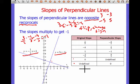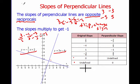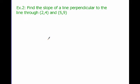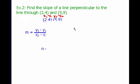So the key thing is that the slopes of perpendicular lines are opposite reciprocals of each other and they multiply to get negative 1. Here's an example: find the slope of a line perpendicular to the line through (2, 4) and (5, 9). To find the perpendicular slope, I first find the slope of the given line. With x1=2, y1=4 and x2=5, y2=9, using m equals y2 minus y1 over x2 minus x1: 9 minus 4 over 5 minus 2 gives me 5 thirds.